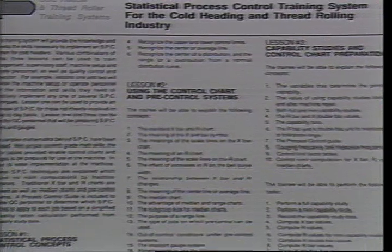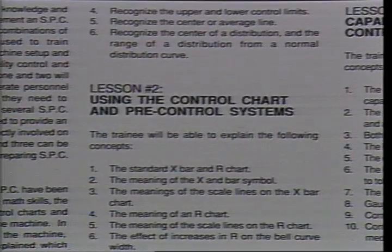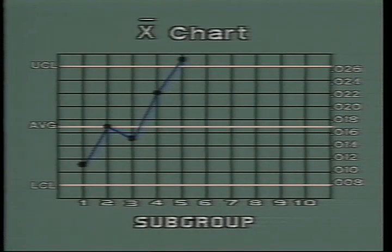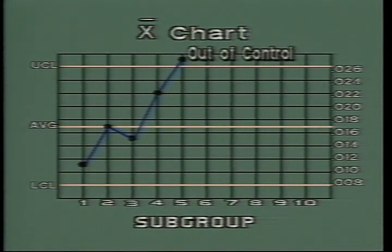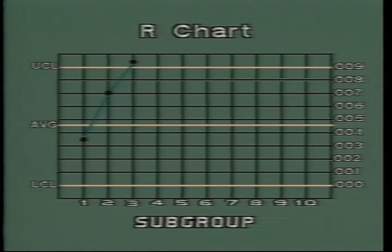Lesson 2 explains how to gather a subgroup, then measure, calculate, and plot both X-bar and R values. It also explains how to recognize out-of-control conditions. In these charts, you must be able to recognize the three conditions that would indicate that the process is out-of-control. The first condition is when a point is plotted above the upper control limit. On the R chart, it would indicate that the range of sizes within the subgroup had increased beyond the normal variation found during the capability study.